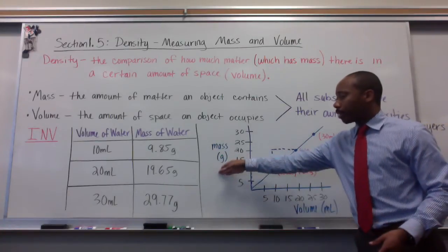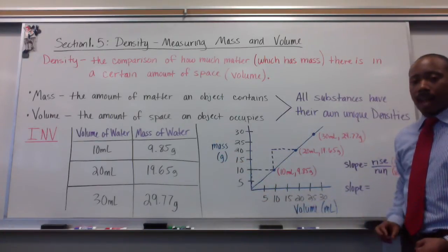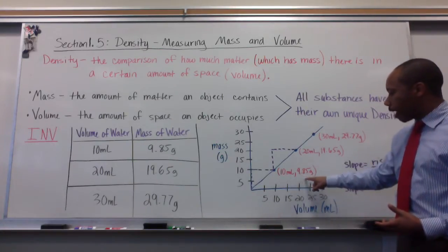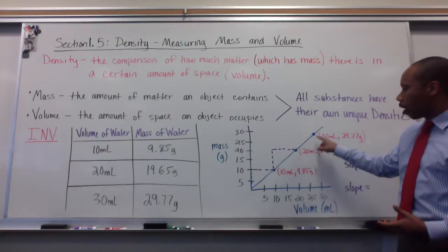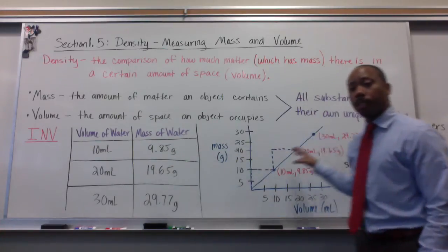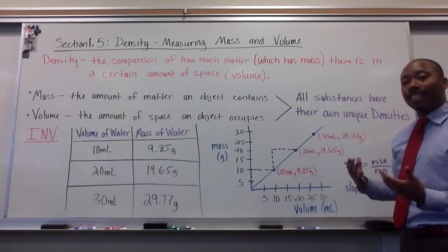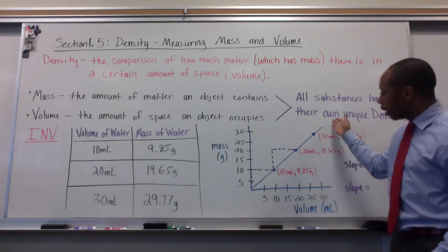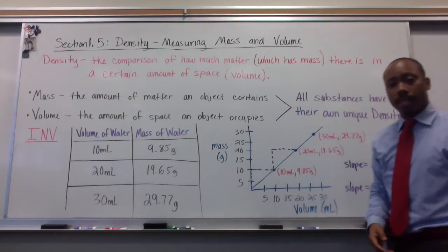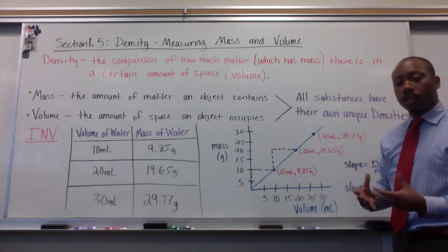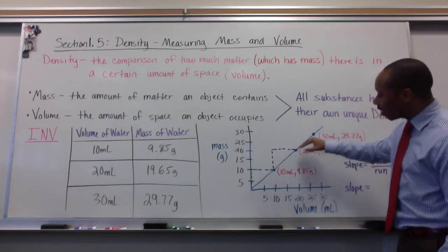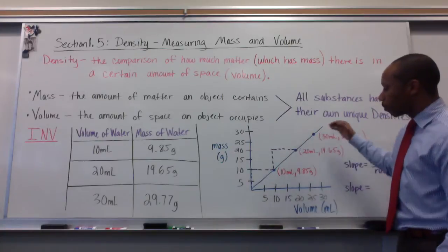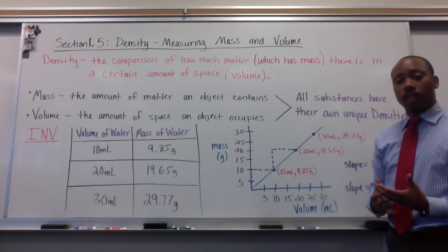On my y-axis, I have mass versus volume on my x-axis. If I plot these points, 10 milliliters and 9.85 grams, I have my first data point there, and I carry on from my data here plotted here. The trend that I see is that these data points are in a line. If I draw a best fit line, it is linear in nature. This tells me that the slope here is constant. It is not a changing slope.